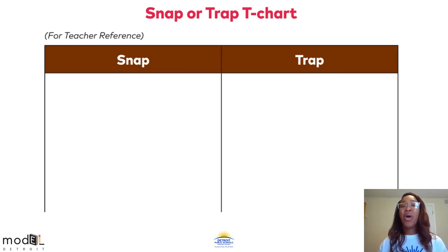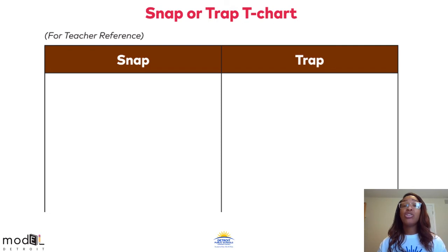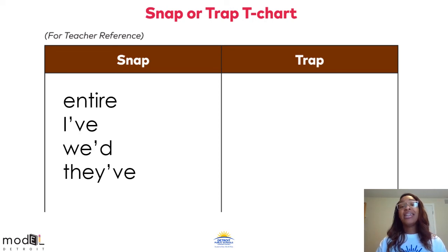All right, second grade superstars, welcome back. Before I share my snap or trap T-chart, I just want to remind you, please do not stress out if your list is not identical to mine. Remember that these are our own opinions. The words that you might find to be a snap, I might say are a trap, or vice versa. So if your list doesn't match mine, it's okay. So without any further ado, let me go ahead and share my list. In the snap column, I wrote the words entire, I've, weed, and they. I find these words to be a snap, meaning they're spelled exactly how they're pronounced. They didn't give me any drama or difficulty when I was reading them.